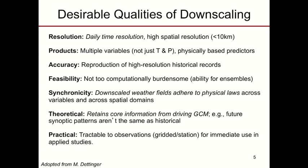If we were to trap a group of climate scientists, meteorologists, and end users in a room, throw the key away, and have them come up with a wish list for downscaling, you might see something that resembled this list here. Many of these items are clearly met with statistical downscaling and not with dynamical downscaling, and vice versa. With these qualities in mind, it's important to explore the spectrum of downscaling methods and ask whether these different qualities are being met — and it truly depends on the application of the downscaled data set.